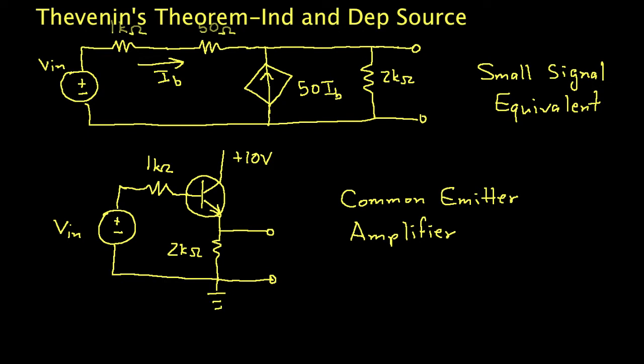We will do this for a circuit that has real-life applications, and so I've drawn two circuits here. The bottom one is called a common emitter-transistor amplifier circuit. It's a simple, cheap amplifier that's often used.